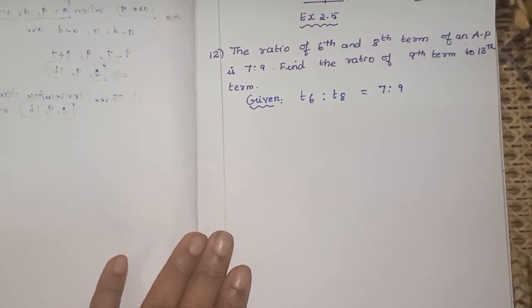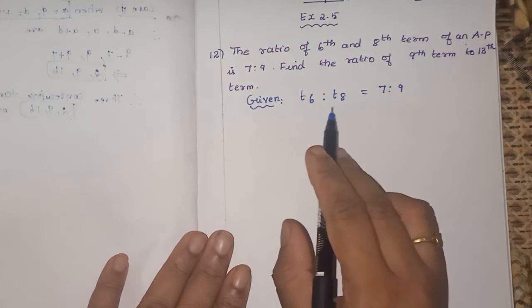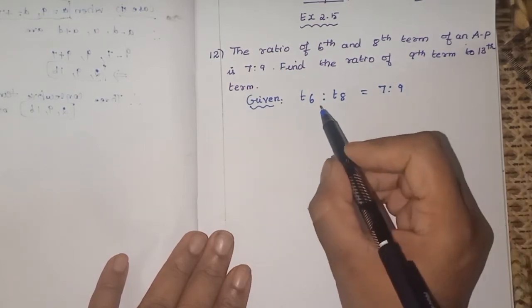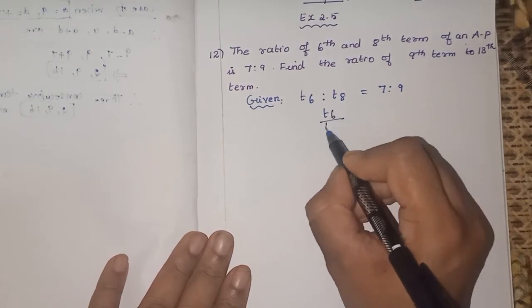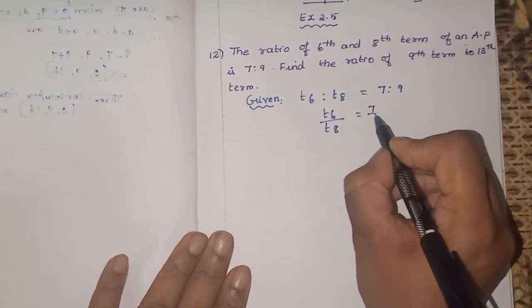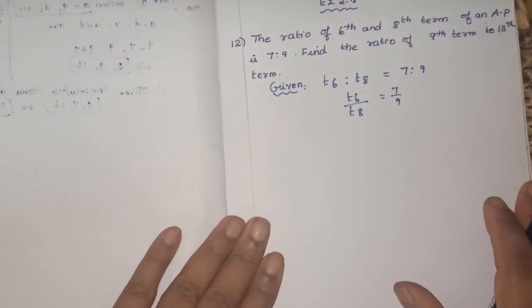We have to substitute what is asked in the question, so that we will get the ratio of 9th term to 13th term. So now T6 is to T8, how will you write the ratio in another form, in fractional form? T6 by T8 is equal to 7 by 9. So what is the Nth term?